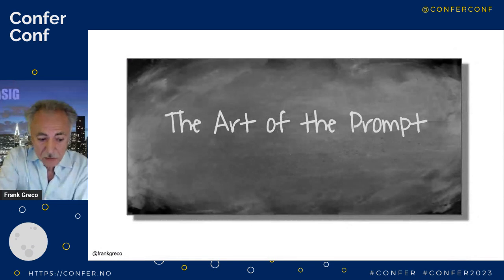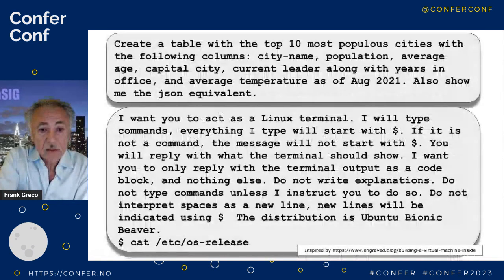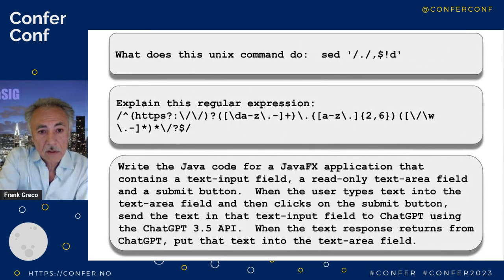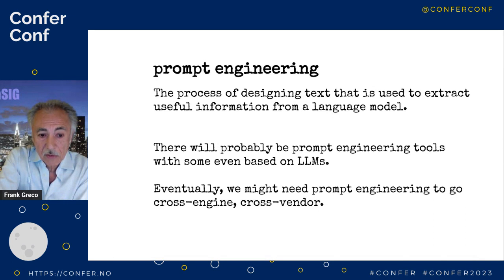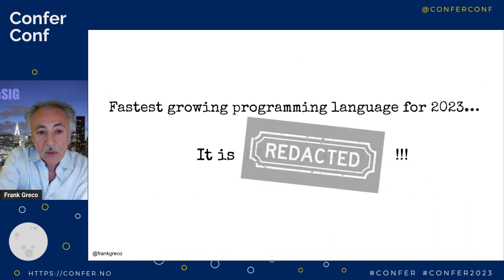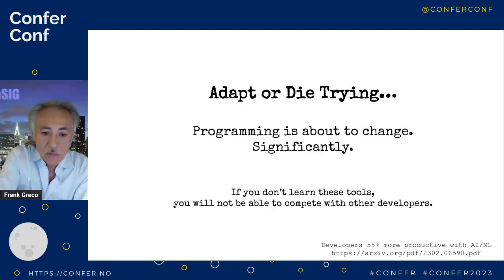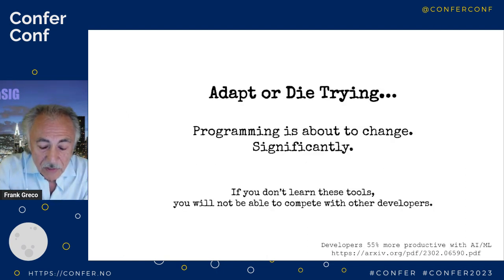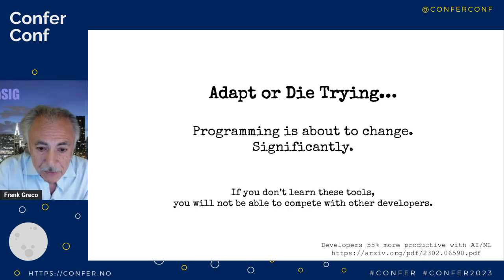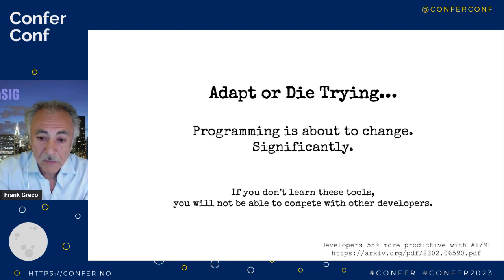You have to learn how to create prompts. Some prompts can be quite sophisticated. You can ask: what does this Unix command do? Write a JavaFX program for me. These are tools for you as a developer. You need to understand prompt engineering. The fastest-growing programming language for this year and next year is English — this is how we program now, and it is a programming language. So I'll end with this: AI is not going to take your job. But somebody using AI is going to take your job. You have to learn these tools if you want to compete with other developers. Thank you very much and have a good rest of the day.